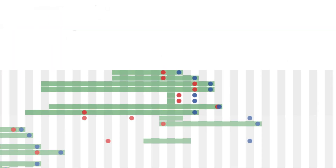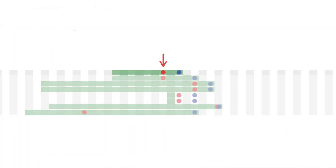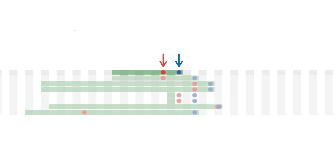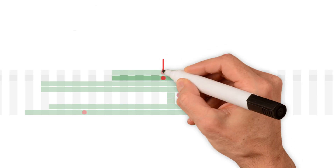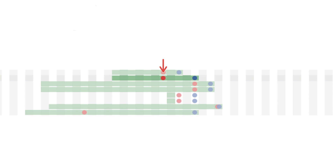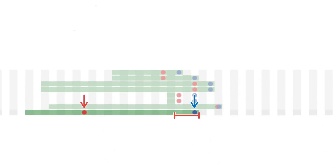Let's look at our transmission pairs again. This infector develops symptoms here, and we know from the graph that the infectee will develop symptoms two days later. But since infectiousness starts two days before symptom onset, he's already infectious and should be isolated immediately. In some pairs we'll have a little more time, whereas in others, time to act has already elapsed.